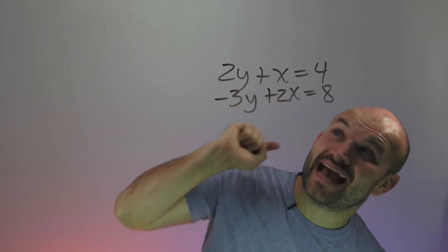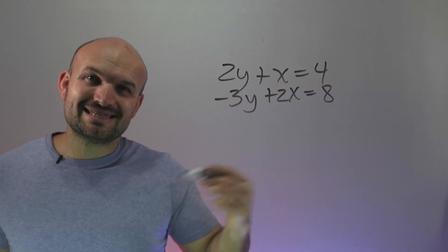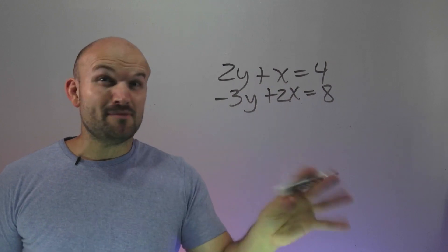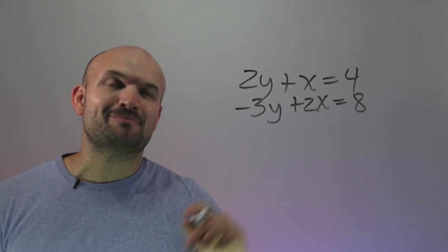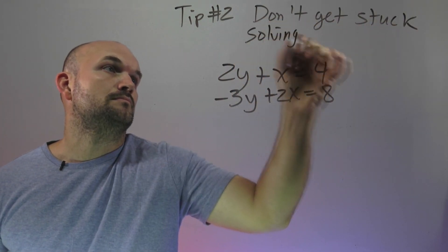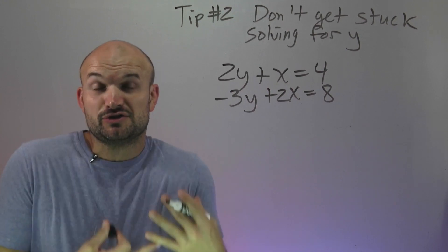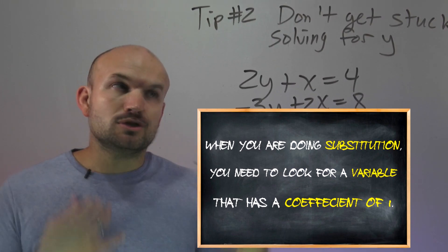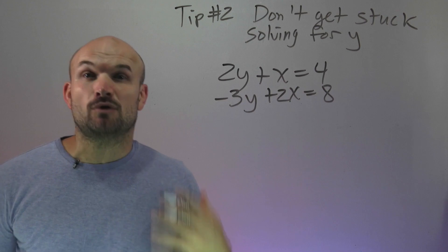For this next example, you can see we have a variable that has a coefficient of 1, so we're going to want to use substitution. But the problem is that last time it was y that was isolated, which we're used to. This equation is not solved for x. Going back to tip number 1, substitution is probably going to be our ideal method. That brings us to tip number 2: a lot of times students always want to solve for y because of slope-intercept form. But when you're doing substitution, it doesn't matter — we're looking for whatever variable has a coefficient of 1, and in this case it's going to be x.